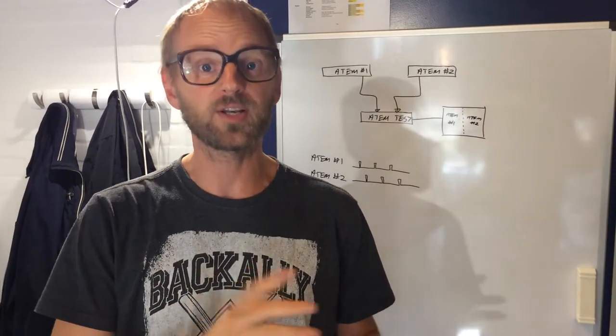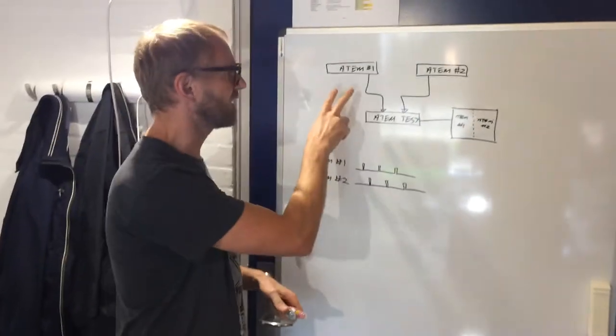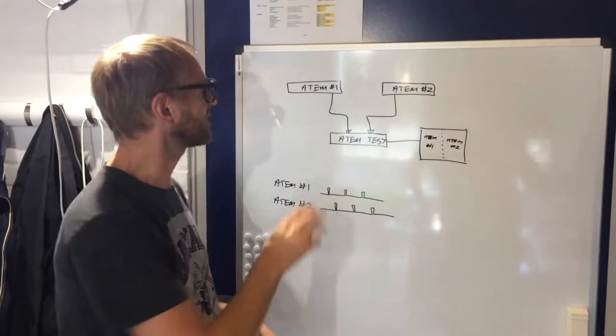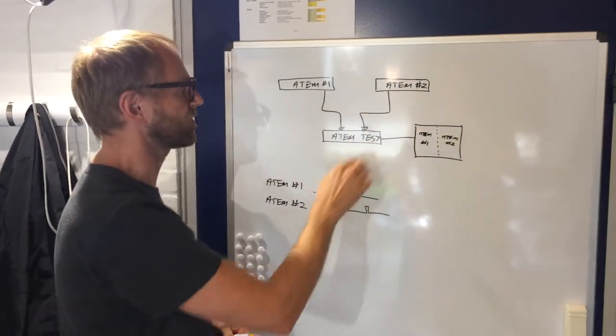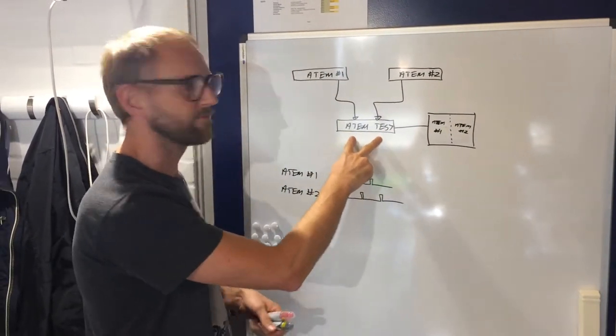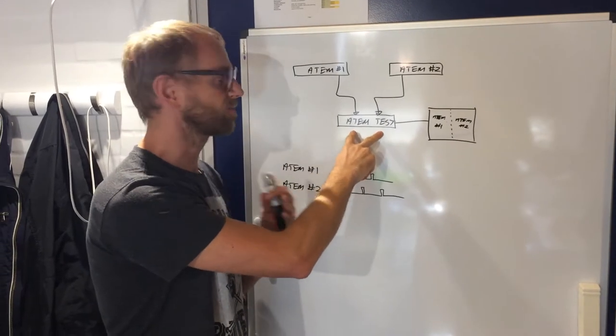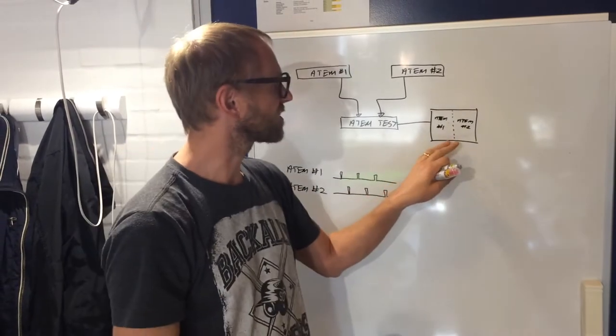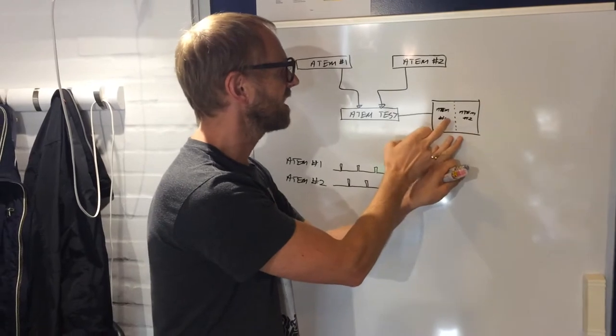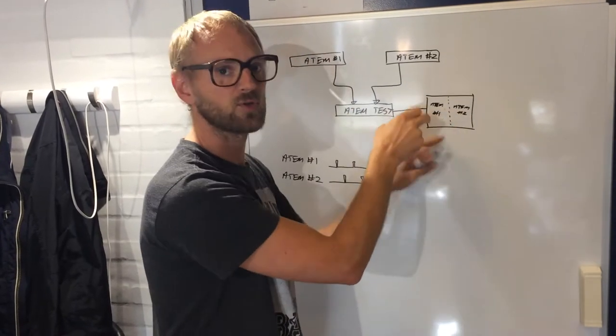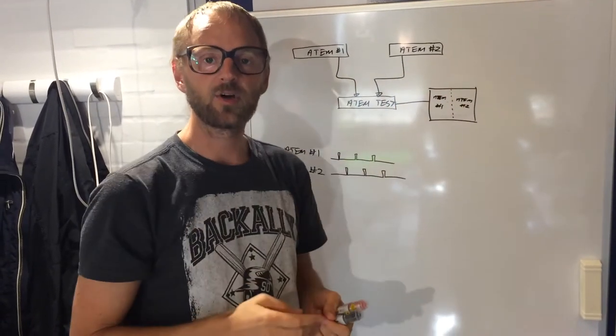First of all, my setup is I have ATEM switcher number one and number two, and they go into a test switcher which just makes a split screen so I can see ATEM switcher one and number two's output on this screen.